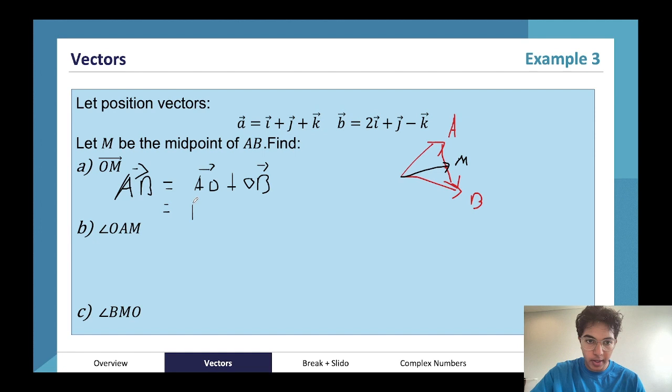And minus 1 minus 1, which is going to be minus 2k. So AB is equal to i minus 2k.